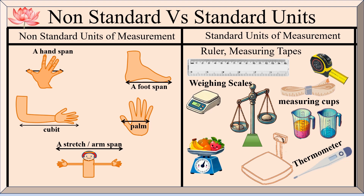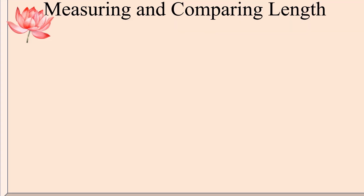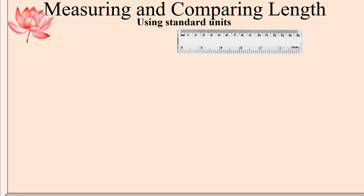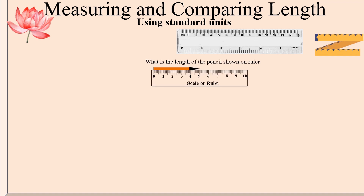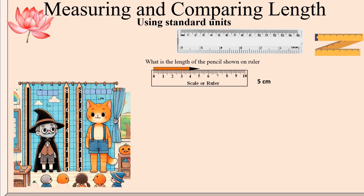This is a 15-centimeter ruler. Each centimeter is divided into millimeters, and on the opposite side, inches are marked. Let us measure the length of this pencil using a ruler — the length of the pencil is from 0 to 5. It is 5 centimeters. Now let us take an example of comparing lengths — here we are going to measure the height of Oscar and Sophie.